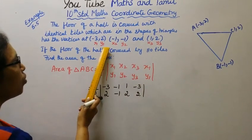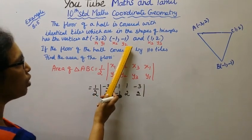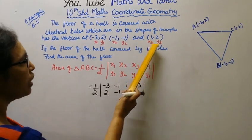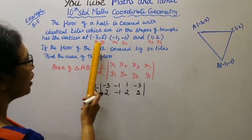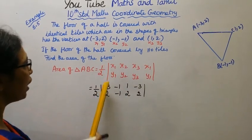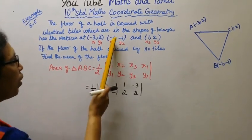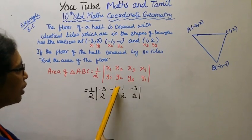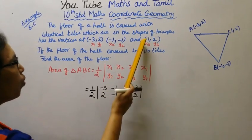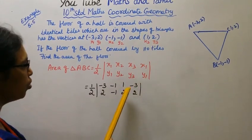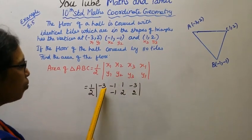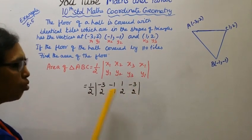This x1, this y1, this x2, this y2, this x3, y3. This is minus 3, 2. Minus 1, minus 1. 1, 2. Again, minus 3, 2.